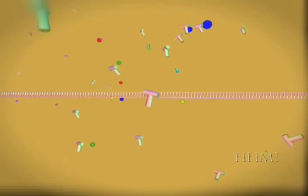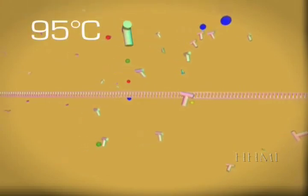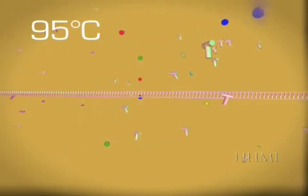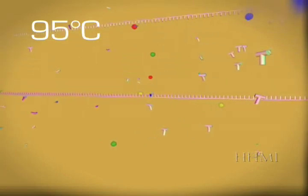At the beginning of the cycle, the solution is heated to 95 degrees Celsius. This causes the DNA to unzip and separate into two single strands of DNA.